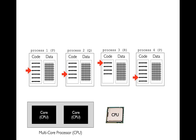I might have many different processes running on my machine — here I have processes one, two, three, and four. In the parentheses after the process name I show what the program name is, so a process is just a running program. Here I actually have three different programs: P, Q, and R. The P program I started twice — maybe I opened two terminal windows running the same program at the same time. Those two different processes have their instruction pointers at different places, and there's no need for them to be in sync.